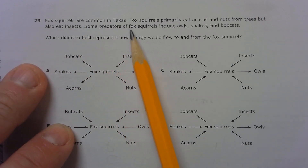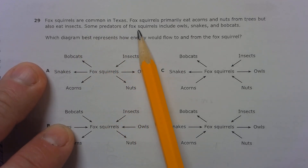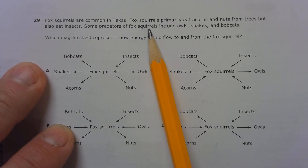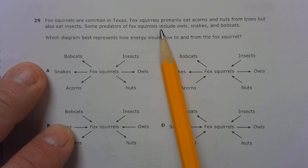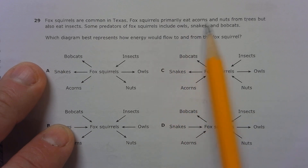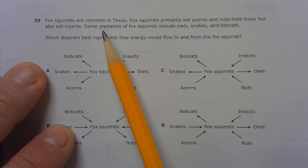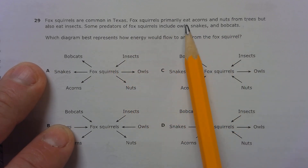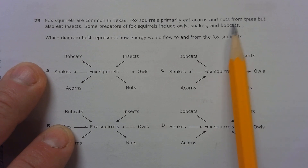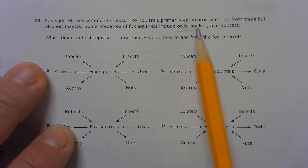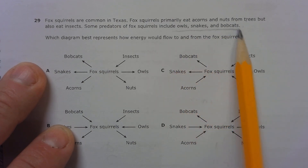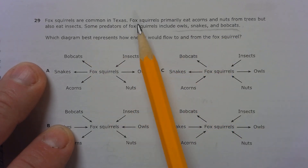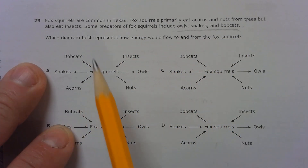Some predators of fox squirrels include owls, snakes, and bobcats. These things are eating the fox squirrels.